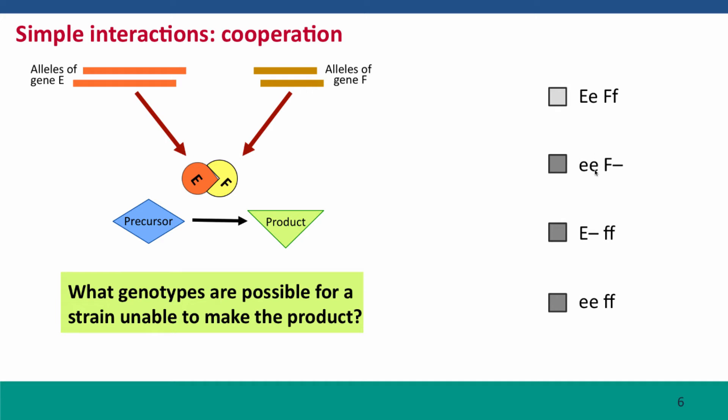A defect in production of protein E masks what's going on at gene F and a defect in the production of protein F masks what's going on at gene E.